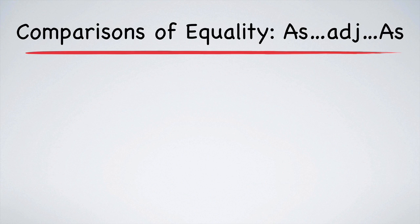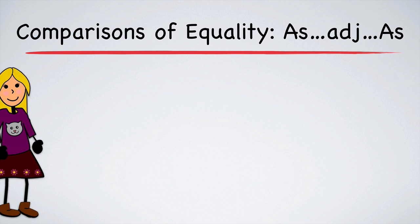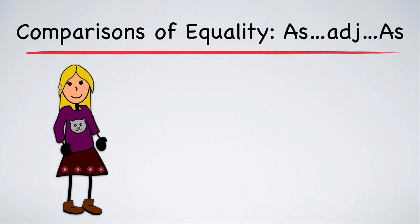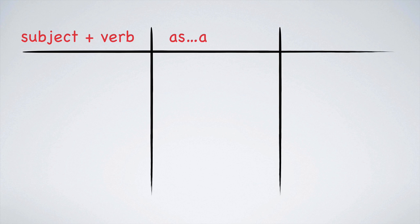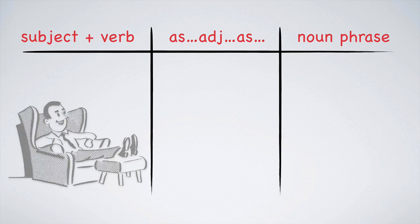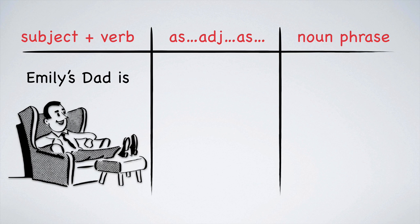Let's get started with comparisons using as adjective as. First we'll practice making comparisons of equality. Emily, would you be so kind as to give us an example? My dad is as strong as Superman. Thanks Emily. Let's analyze the grammatical pattern. We have the subject plus the verb, then as adjective as, followed by a noun phrase.